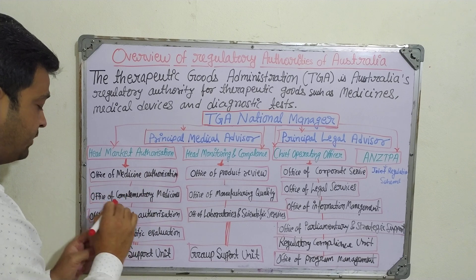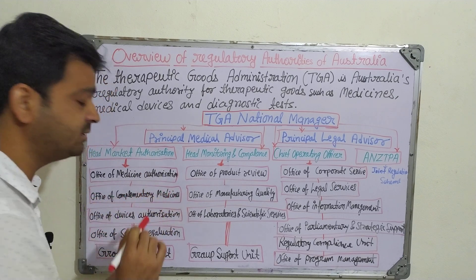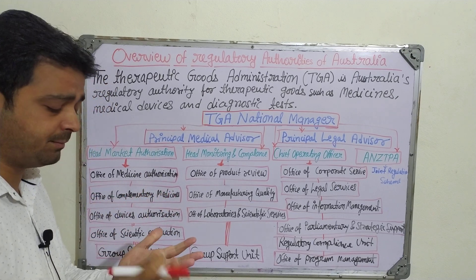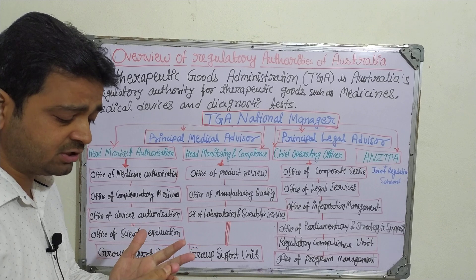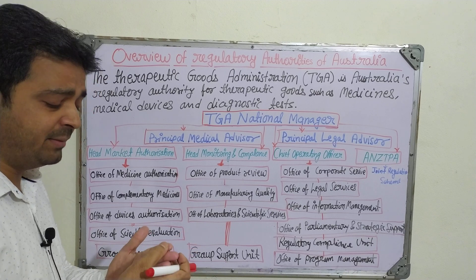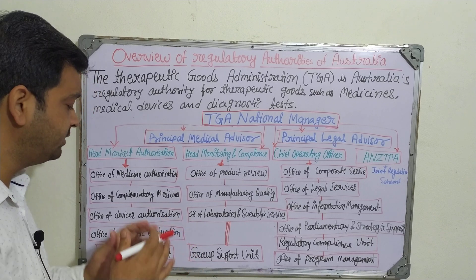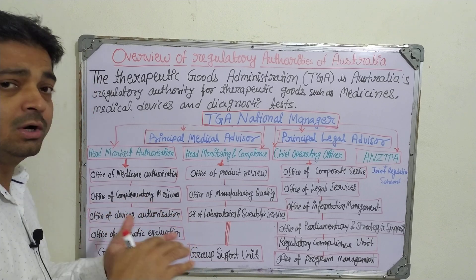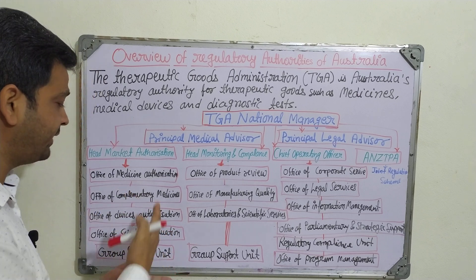The second office under market authorization is the Office of Complementary Medicine. This covers complementary therapies such as massage, dietotherapy, yoga, and meditation — all of which also require approval from this office.